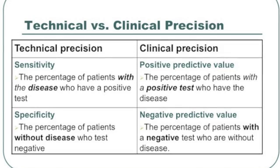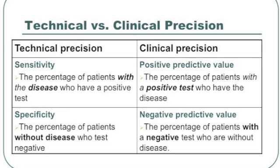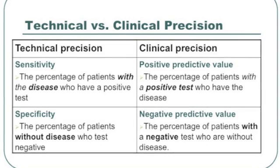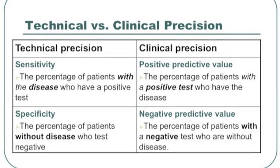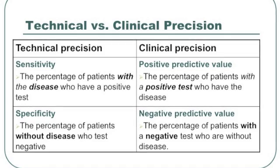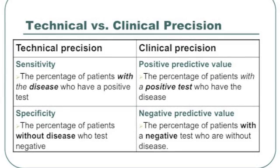Positive and negative predictive values look at things the other way — now we're not in a laboratory, but in practice. We've sent a test to the laboratory and they've sent the results back. We want to know how many of the tests that come back as positive are truly positive — that's the positive predictive value. The negative predictive value is the number of tests that turn out negative in which patients truly don't have the disease.